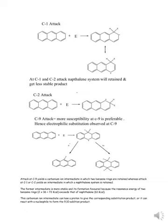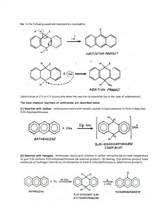The nucleophilic substitution product is also formed at C9. The resonance energy of benzene is 36 kcal/mol; that of naphthalene is 61 kcal/mol. For three benzene rings it would be 72 kcal/mol, but for three rings in anthracene it is only 61 kcal/mol. The symbol Nu⁻ represents a nucleophile. Substitution at C1 or C2 occurs only when the reaction is reversible.